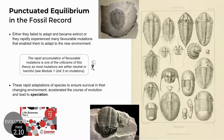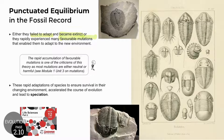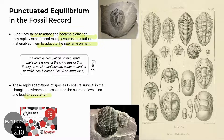Gould and Eldridge proposed that fossil species either did not adapt and died out — became extinct — or they experienced multiple favorable mutations that gave them an advantage and allowed them to adapt and survive in the new environment. These rapid adaptations led to sudden speciation, the formation of new species.